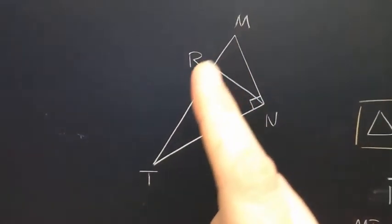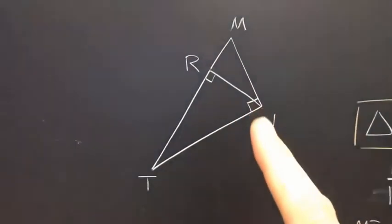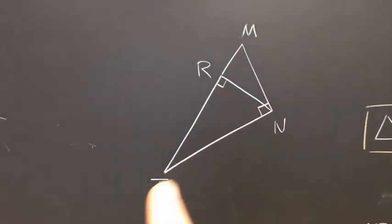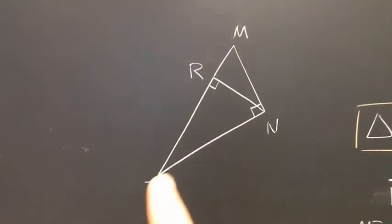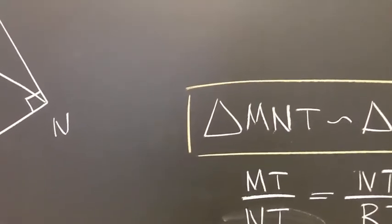Remember, the hypotenuse is always the longest length. So starting at M and going to N and then going to T, so shortest leg to middle leg, M-N-T. So I would start at triangle MNT.